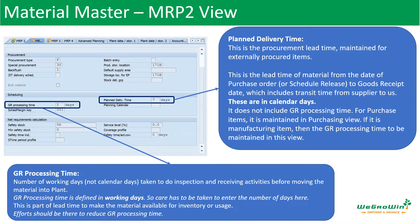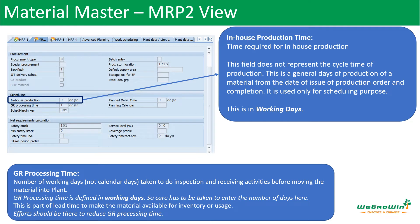Overall lead time: planned delivery time is defined by calendar days — calendar days is one day. So planned delivery time is in calendar days. GR processing time is in working days. In this way we can analyze the lead time. In-house production time is a general time — this is a cycle time.